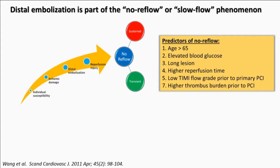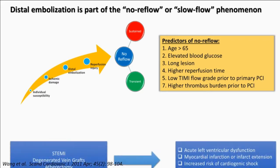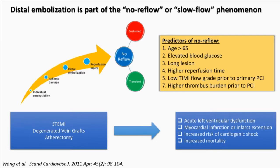The predictors of no-reflow, particularly in acute MI, include advanced age, blood glucose elevations, long lesions, higher reperfusion times, low TIMI grade flow to begin with, and higher thrombus burden. The lesions we're most concerned about are STEMI lesions with high thrombotic burden, degenerated vein grafts, and cases involving orbital or rotational atherectomy. The consequences of embolization include worsening LV dysfunction, infarct extension, increased risk of cardiogenic shock, and therefore increased mortality.